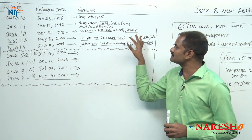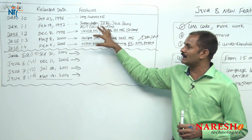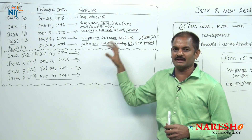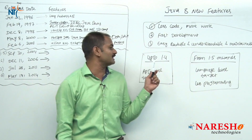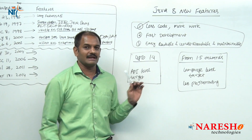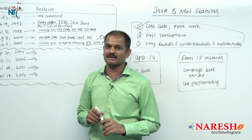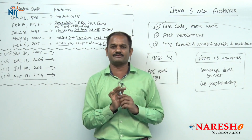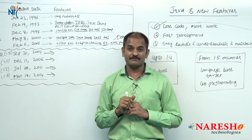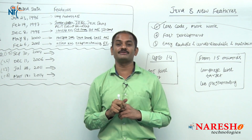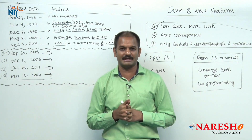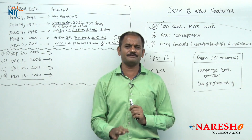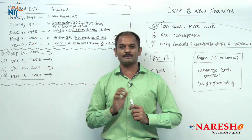If you observe carefully, from 1.0 to 1.4 most of the changes are API level only. As I told you, the main focus of Sun Microsystems up to 1.4 is API level — not many language-level changes. Whatever language-level features were given in 1.0, the same features continued up to 1.4 with minimal changes. But from 1.5 onwards, so many features were changed and so many new features were added. We compulsorily have to remember those features — every feature must be learned and used in your project development.